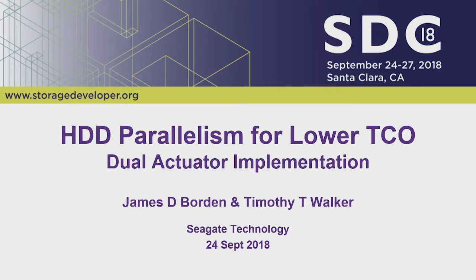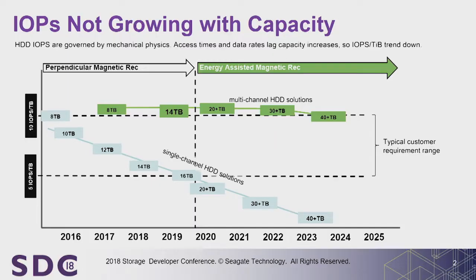I want to tell you why we're going down the path of multi-actuator hard drives. The idea has been around a long time — various ways of adding parallelism to rotating media have been explored for decades. Seagate floated the idea internally a couple of years ago and most of us thought 'here we go again,' but this time there is an actual reason for doing it.